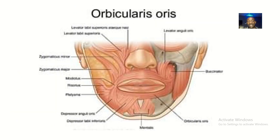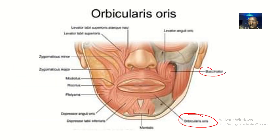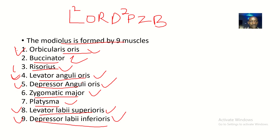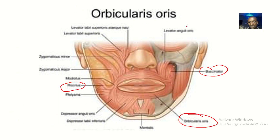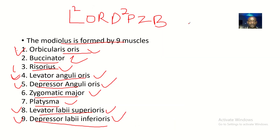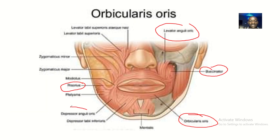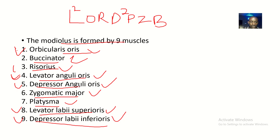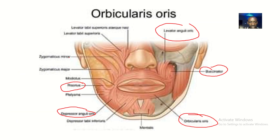Let's try to see where you can identify these muscles on the picture. Orbicularis oris is the muscle that makes up the lips. The buccinator is useful for inflating your cheeks. Risorius is here at the angle of the mouth. Levator anguli oris takes the upper lip upward. Depressor anguli oris depresses the angle of the mouth. Zygomaticus major is here — it is for smiling.